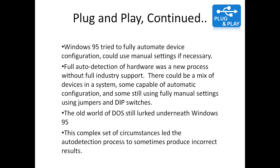Windows 95 tried to fully automate device configuration and would use manual settings if necessary. Full auto-detection of hardware was a new process without full industry support. There could be a mix of devices — some capable of automatic configuration and some still using manual settings like jumpers and DIP switches. The old world of DOS still ran underneath Windows 95, and this complex set of circumstances sometimes led the auto-detection process to produce incorrect results. But by and large, it was a large step forward in bringing auto-configuration of hardware to the mainstream.